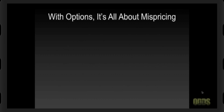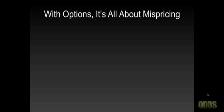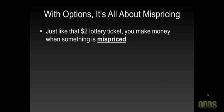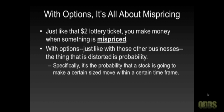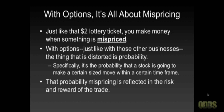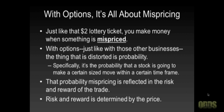With options, it's about mispricing and its impact on probability, risk, and reward. Just like that $2 lottery ticket, you make money when something is mispriced. With options, just like with those other businesses, the thing that is distorted is probability — specifically, the probability that a stock is going to make a certain size move within a certain time frame. That probability mispricing is reflected in the risk and reward of the trade, and risk and reward is determined by the option price.